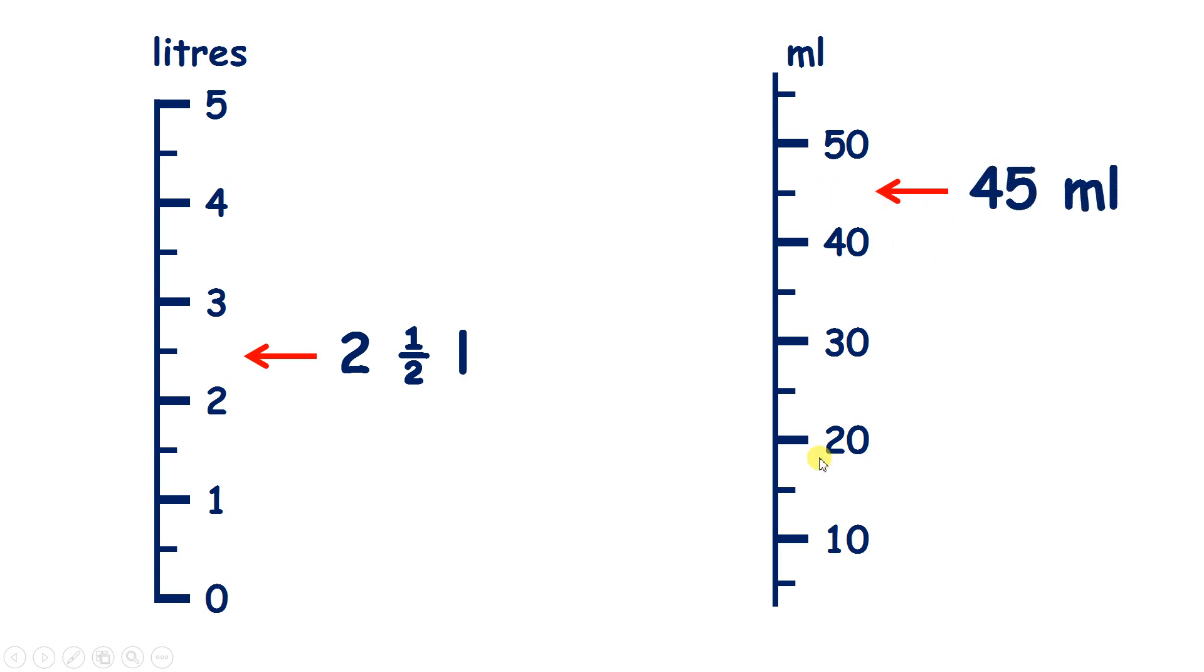Well, the arrow's pointing right in the middle of 40 and 50, so we have 45 millilitres. Because if every 2 marks we have 10 more, then with every mark we have 5 more. So we could count up 10, 15, 20, 25, 30, 35, 40, 45, 50.